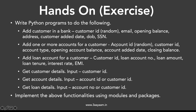The second operation is to add one or more accounts for a customer, passing account ID, customer ID, account type, opening account balance, account added date, and closing balance. The third operation is to add a loan account for a customer — if a customer takes a loan — using customer ID, loan account number, loan amount, loan tenure, interest rate, and EMI.